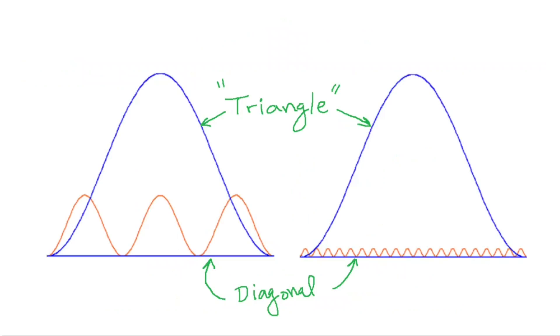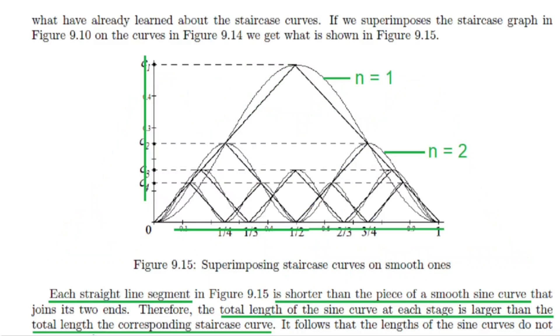Here's a snapshot of two separate stages where we see the analogs of the triangle and the diagonal. In this graph, the staircase paths are superimposed on the sinusoidal curves. Here's n equal to one and the corresponding staircase path, which is the main triangle. The first step here is n equal to two and so on.